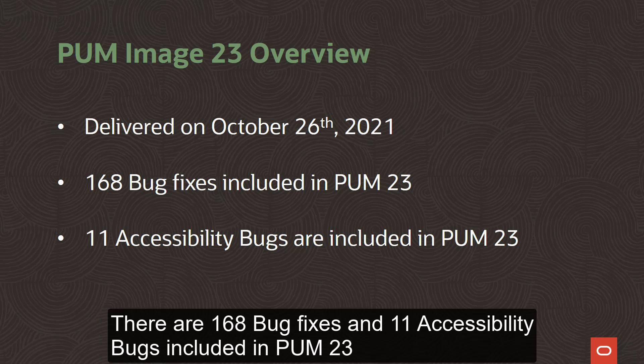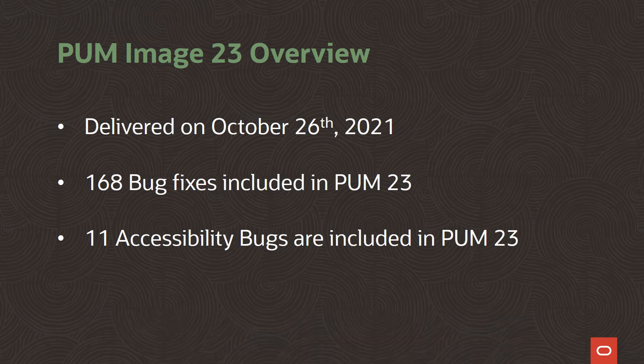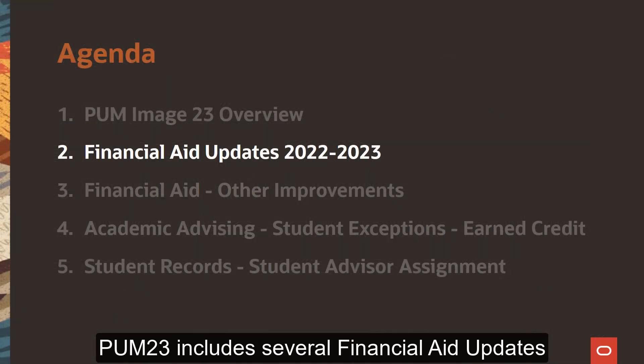There are 168 bug fixes and 11 accessibility bugs included in PUM 23. PUM 23 includes several Financial Aid Updates.